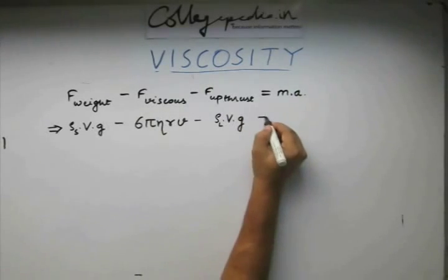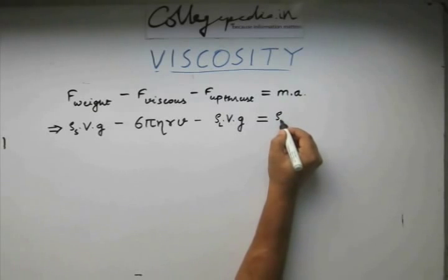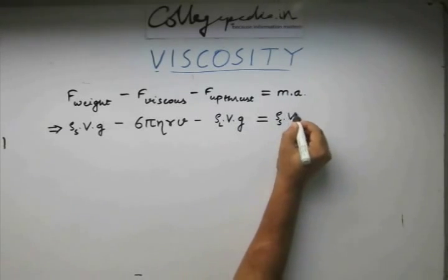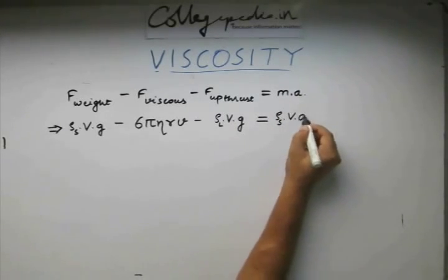This should be equal to mass again, which is ρs times v, this into the acceleration. This is the term or quantity we are supposed to find out.